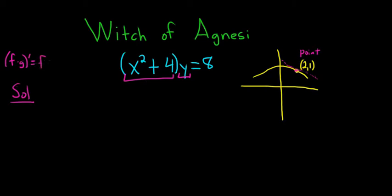So it's the derivative of the first times the second plus the first times the derivative of the second. So in all of this, this is our f and this is our g.